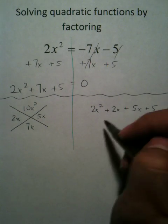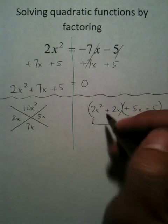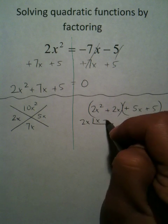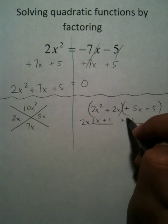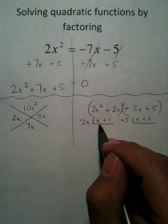Use the bam-bam method, bam, bam. Now you're using some GCFs. Pull out a 2x, you'll get x plus 1. Pull out a positive 5, you'll get x plus 1. They match in the inside, so you know you're doing this correctly.